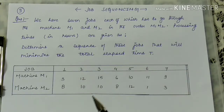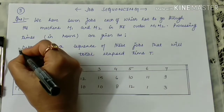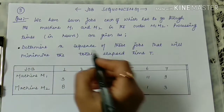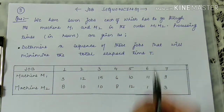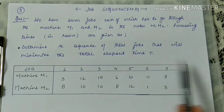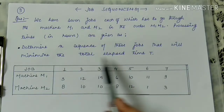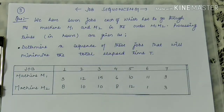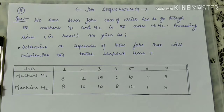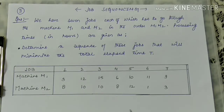We have two questions to solve. The first question is to determine the sequence of these jobs that will minimize the total elapsed time, and then we have to find the total elapsed time. If you remember from my previous video, we discussed Johnson's method.